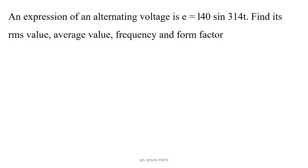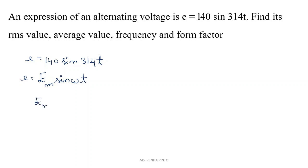First problem: an alternating voltage is expressed as e = 140 sin(314t). Comparing this with the standard form e = Em sin(ωt), we can see that Em = 140 volts and ω = 314 radians per second. Using this data we will find the RMS value, average value, frequency, and form factor.